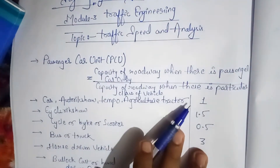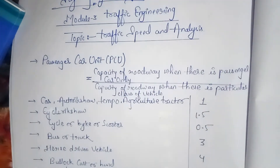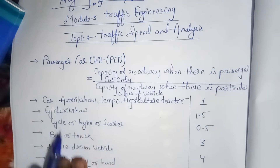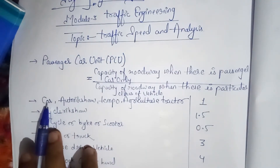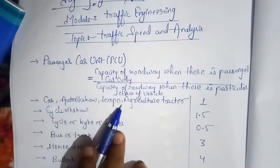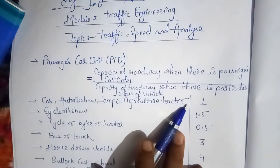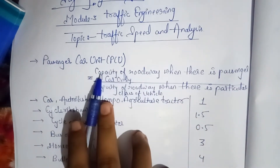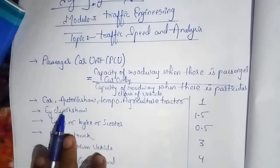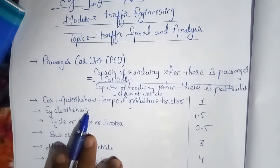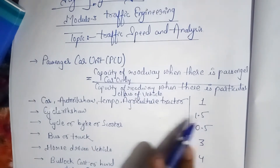I will show you some values that are very important and most of the state level exams can ask these directly. First, car, auto rickshaw, tempo, and agriculture tractor — for these 4 things, the PCU value is 1. Next, cycle rickshaw has a PCU value of 1.5.